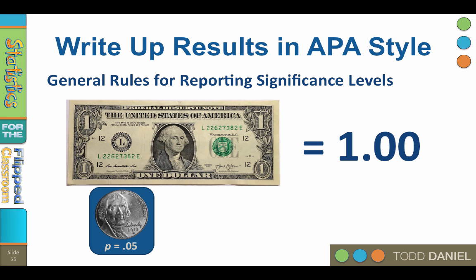This example applies to writing up results in APA style using output from SPSS. In SPSS, the probability value or p-value for an obtained result is in a box titled SIG, which stands for significance. The box will be located in different places in the output depending upon the test that you're running, but you should be able to find it easily.